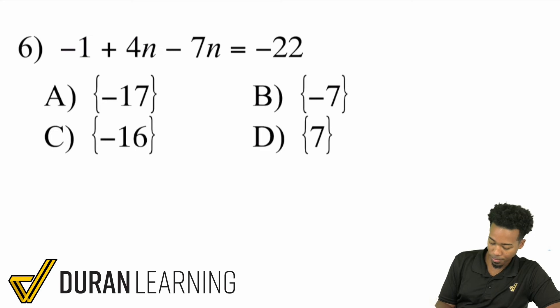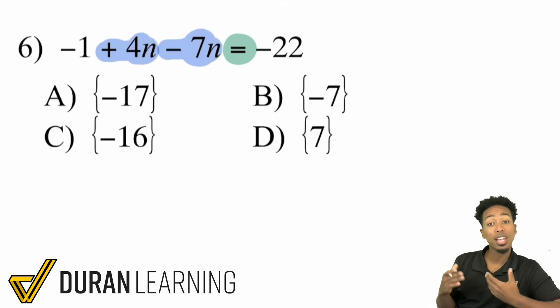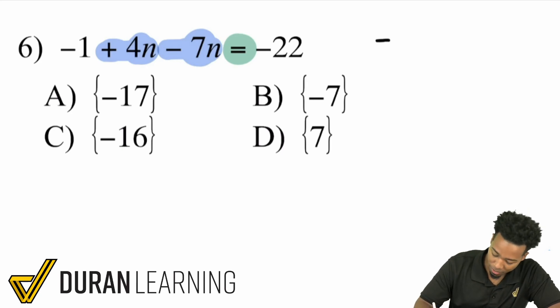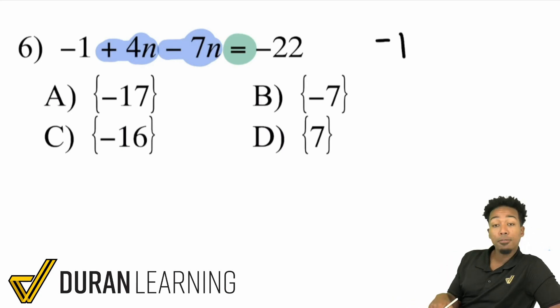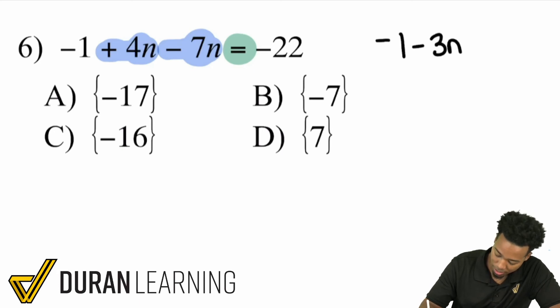So with number six, what we have going on here is we see that on the same side of the equal sign, we have plus 4n minus 7n. Those are like terms, they have the same variable. So combine them accordingly. And we'll have negative 1. And then 4 minus 7. That's a difference of 3, but it's going to be negative 3 because that 7 is bigger. So minus 3n equals negative 22.